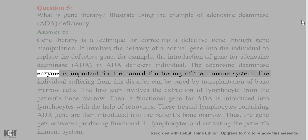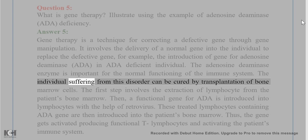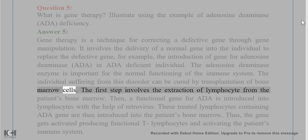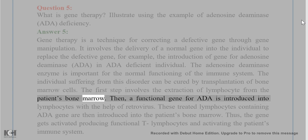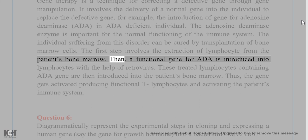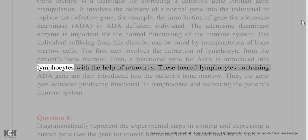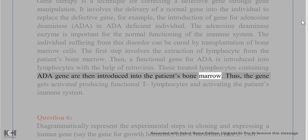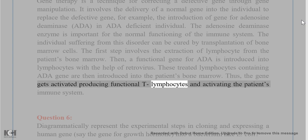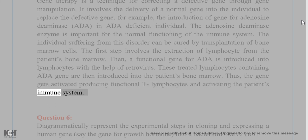The adenosine deaminase enzyme is important for the normal functioning of the immune system. The individual suffering from this disorder can be cured by transplantation of bone marrow cells. The first step involves the extraction of lymphocytes from the patient's bone marrow. Then, a functional gene for ADA is introduced into lymphocytes with the help of retrovirus. These treated lymphocytes containing ADA gene are then introduced into the patient's bone marrow. Thus, the gene gets activated producing functional T lymphocytes and activating the patient's immune system.